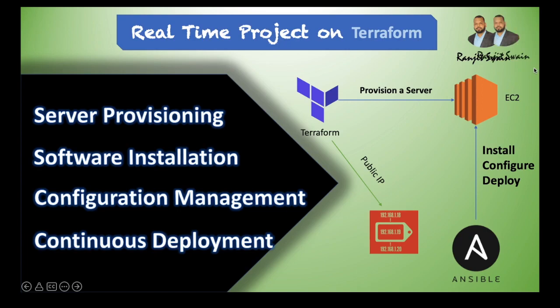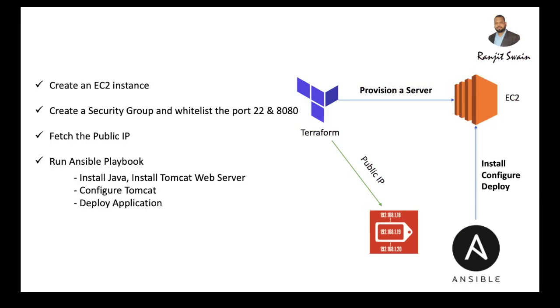Hello friends, welcome back. Today we'll do a small real-time project on Terraform covering server provisioning, installation, configuration management, and continuous deployment. We'll write Terraform code to create an EC2 instance, create a security group whitelisting ports 22 and 8080, fetch the public IP of the newly created server, then write Ansible playbooks to install Java, Tomcat web server, configure Tomcat, and deploy the application.